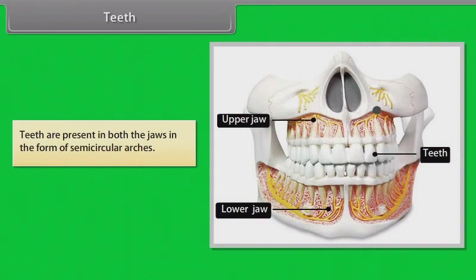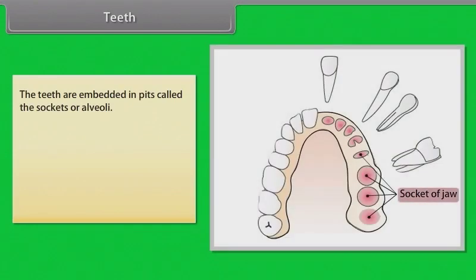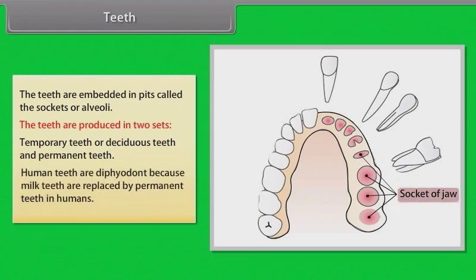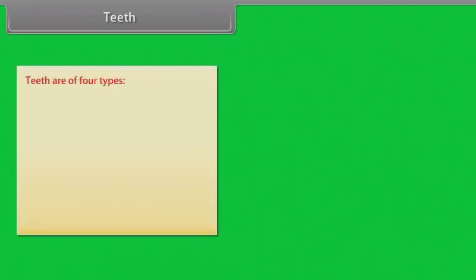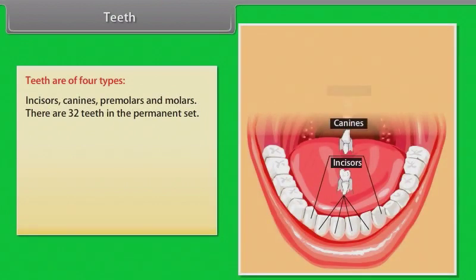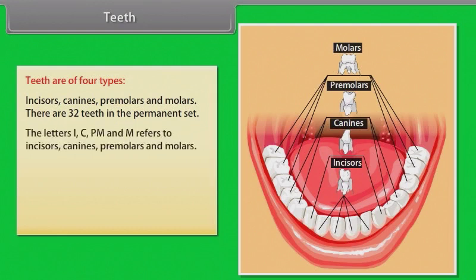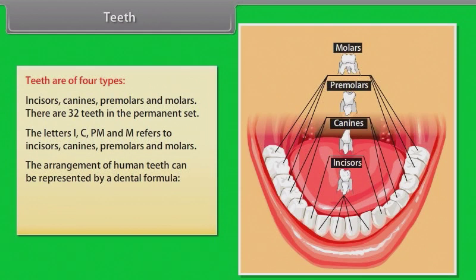Teeth are present in both jaws in the form of semi-circular arches, embedded in pits called sockets or alveoli. Teeth are produced in two sets: temporary or deciduous teeth and permanent teeth. Humans are diphyodont because milk teeth are replaced by permanent teeth. Teeth are of four types: incisors, canines, pre-molars, and molars. There are 32 teeth in the permanent set, represented by the dental formula using the letters I, C, PM, and M.